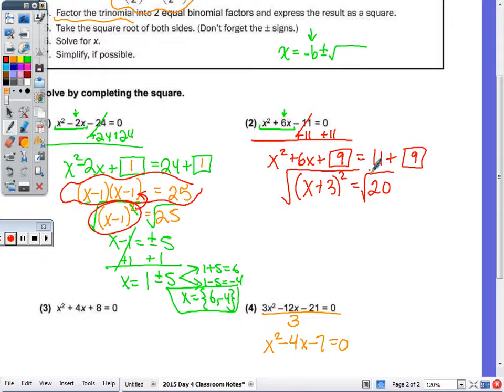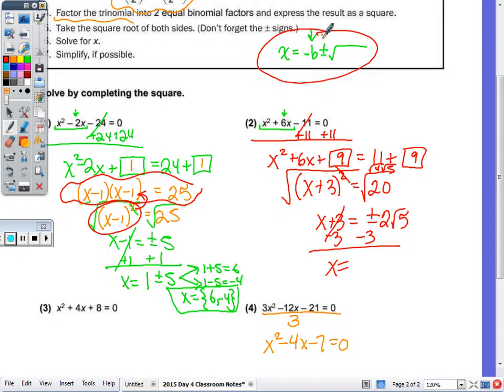Now 20 is radical 4, radical 5. Cancel. So I end up with x plus 3 equals plus or minus 2 radical 5. Subtract the 3 and x equals, remember we want it in this format. So I want that b first, so it's negative 3 plus or minus 2 radical 5.